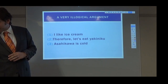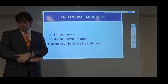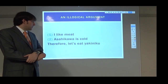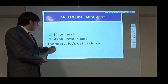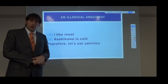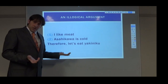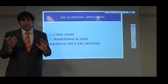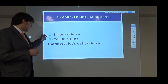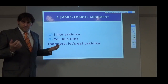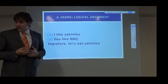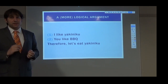Let's do it a little bit better. One: I like meat. Two: Asahikawa is cold. Therefore: let's eat yakiniku. This argument is a little bit better — the conclusion is at the end, and one premise connects to the conclusion since yakiniku is barbecued meat and I like meat. But 'Asahikawa is cold' doesn't connect very well. Let's move further: One: I like yakiniku. Two: You like barbecue. Therefore: let's eat yakiniku. This is a much better argument — both premises connect to each other and to the conclusion, and they're in order. It's not perfect, but it's a step in the right direction.